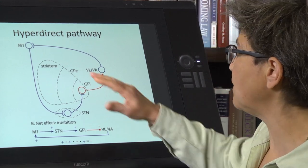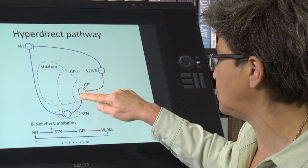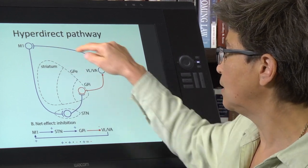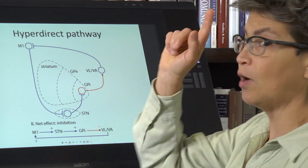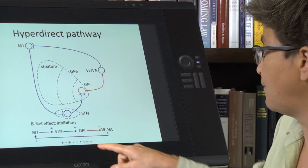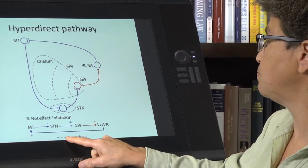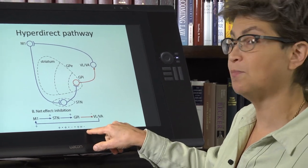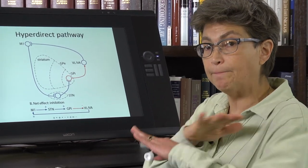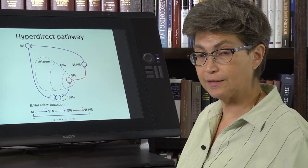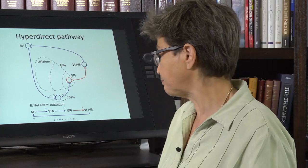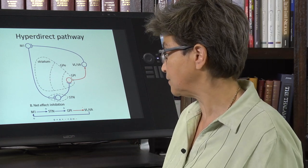So what is the effect? You have excitation, excitation, inhibition, excitation. So you have one inhibition - the net effect: plus, plus, minus, plus is minus. This is going to stop movement. That's the net effect of this.